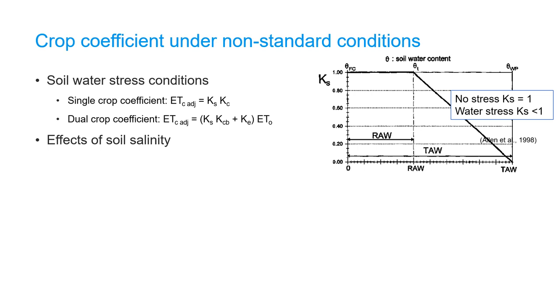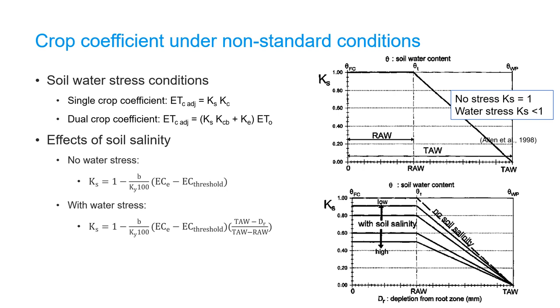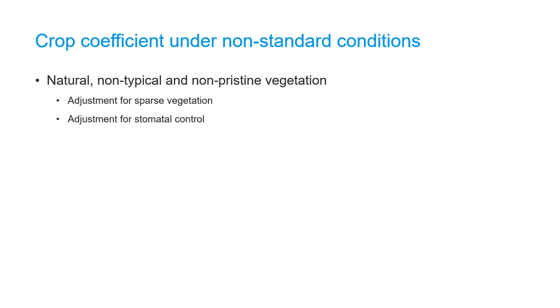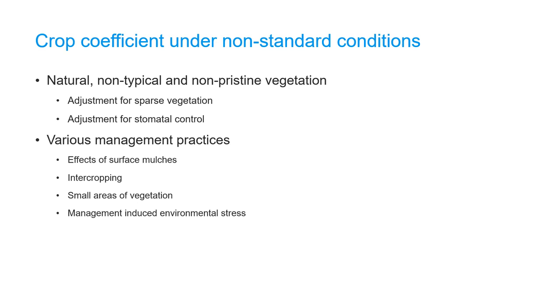Soil salinity will lower Ks, with the effect depending on the electrical conductance measurement of the soil. For other non-standard conditions, further adjustment of crop coefficients are required. These conditions include natural, non-typical, and non-pristine vegetation, which require adjustment for sparse vegetation or for stomatal control. Management practices such as surface mulching, intercropping, small areas of vegetation, and management-induced environmental stress also require adjustments. Non-growing periods also require different adjustment of crop coefficients.